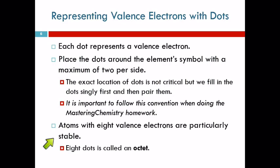What we learned from quantum mechanics is that atoms that have eight valence electrons are particularly stable. All of the noble gases except for helium have eight valence electrons, and they are especially stable. They really don't react with much of anything. Eight valence electrons, or eight dots, is called an octet, just like eight people singing together.